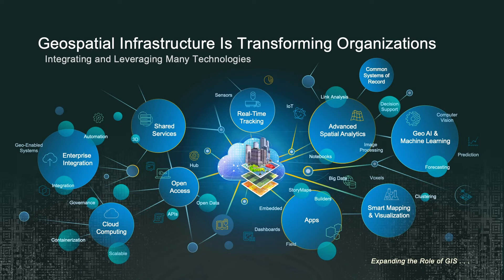This infrastructure vision is literally transforming organizations — not just transportation organizations, but organizations of all types. It's integrating and leveraging technologies of all types: cloud computing, advanced spatial analysis, real-time data. The introduction of geo AI and machine learning is helping us be smarter. And the world of apps is making GIS spread and connect everybody in organizations. This makes your business smarter, more effective, and more responsible.